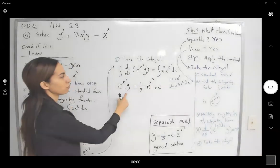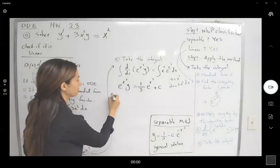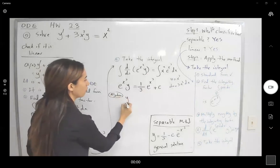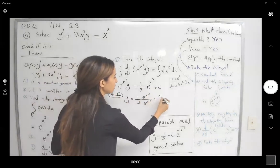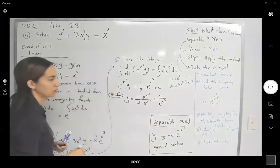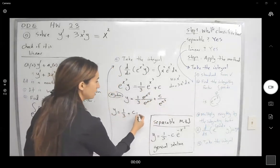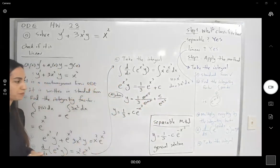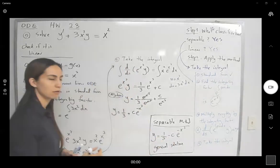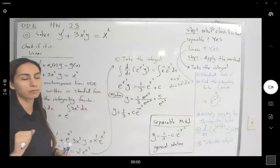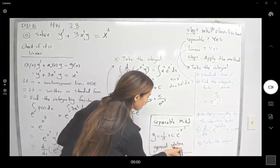Now to isolate y, divide everything by e to the power x cubed. We get y equals one-third e to the x cubed divided by e to the x cubed — these cancel — plus c e to the negative x cubed. So y equals one-third plus c e to the power negative x cubed. You could absorb the sign into the constant and write it as plus capital C, matching our earlier result from the separable method.